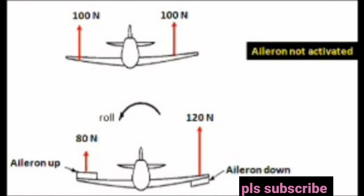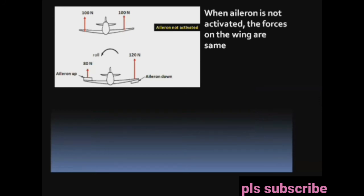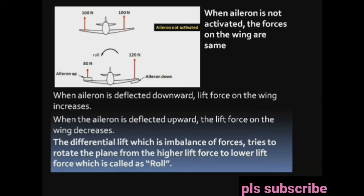When the ailerons are not activated, the forces on the wings are the same. When the ailerons are activated, the downward deflected aileron will carry a higher lift force compared to the upward deflected aileron. This differential lift, which is an imbalance of forces, tries to rotate the plane from the higher lift side to the lower lift side, which is called roll.